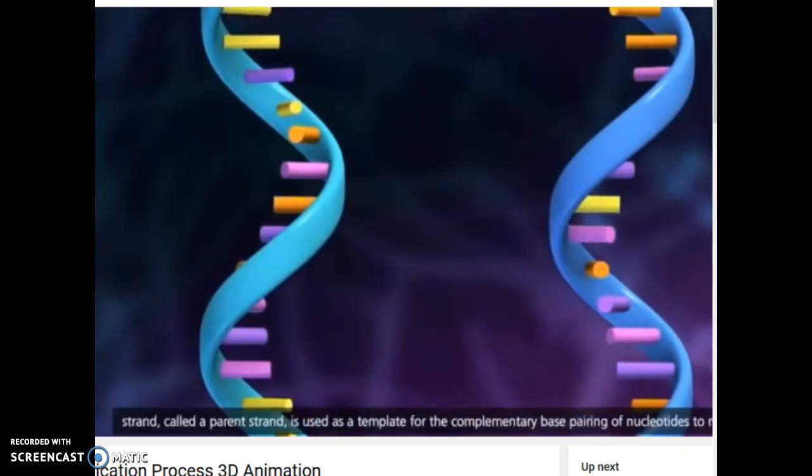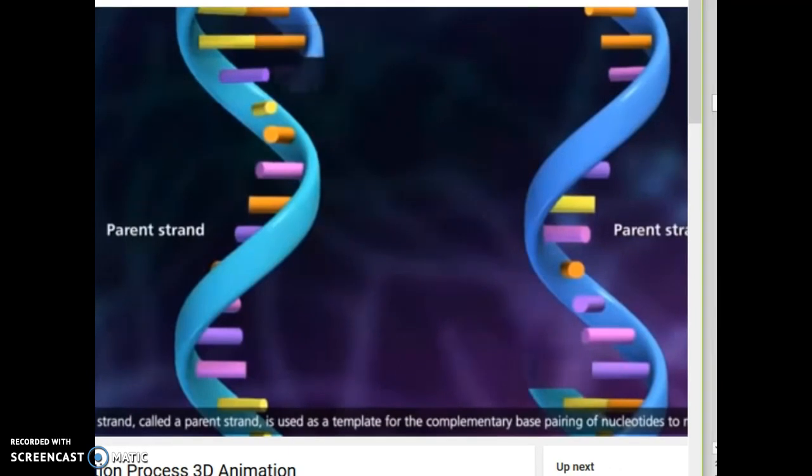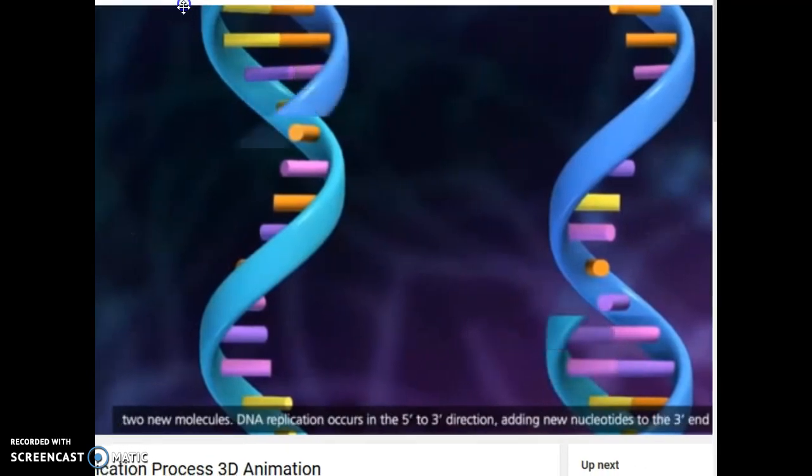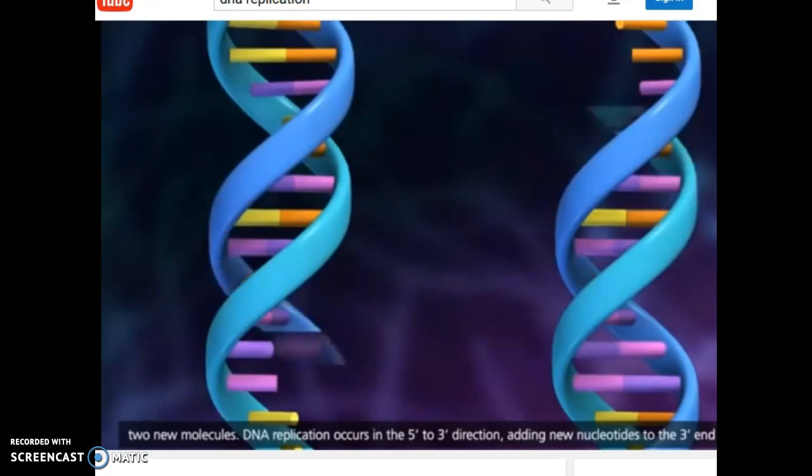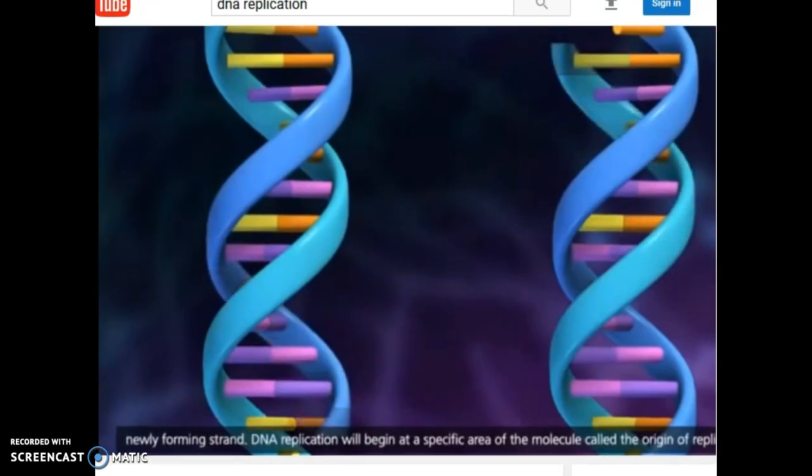and each original strand, called a parent strand, is used as a template for the complementary base pairing of nucleotides to make two new molecules. DNA replication occurs in the five prime to three prime direction, adding new nucleotides to the three prime end of the newly forming strand.